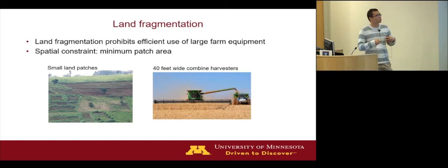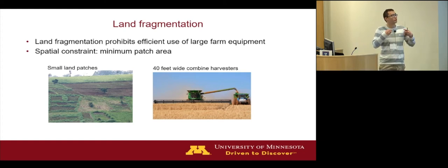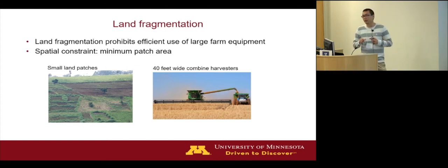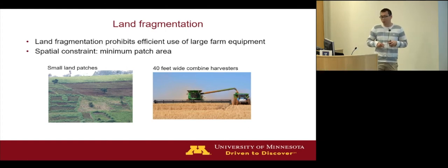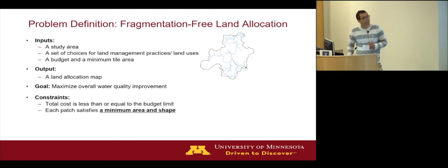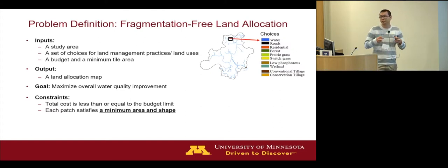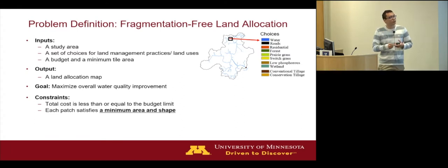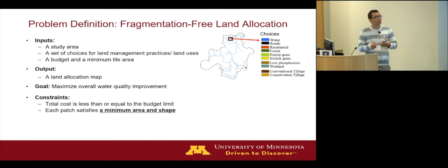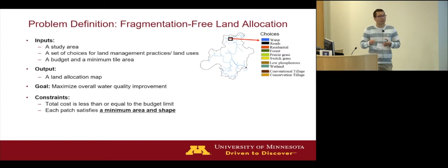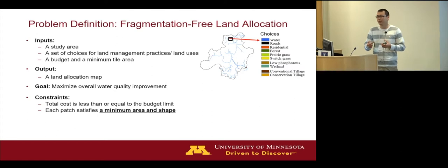For example, a 40-feet-wide combine harvester, popularly used in the Midwest during harvest, can hardly be used if there is so much fragmentation in the result. So we add spatial constraints — specifically, each land use patch must satisfy a minimum area so that it's practical for farm equipment operations. We are given an agricultural watershed where for each location we have multiple choices of land use, land cover, or land management practices, each with a profit value and cost value.